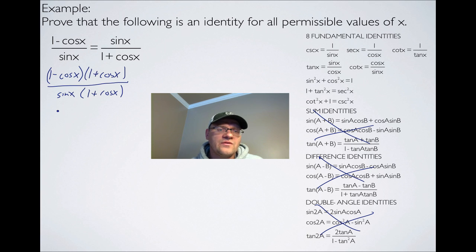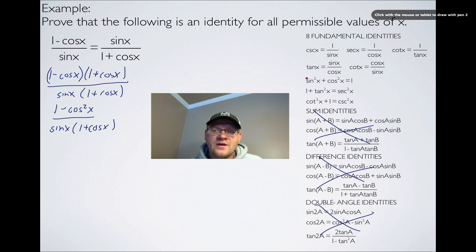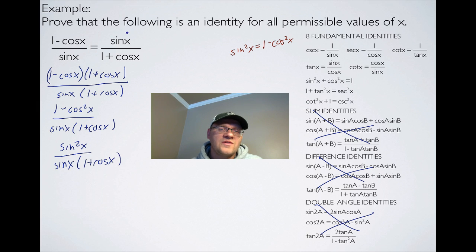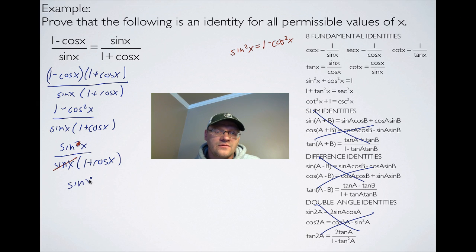Multiplying gives (1 minus cosine x)(1 plus cosine x) on top, which equals 1 minus cosine squared x. On the bottom, I have sine x times (1 plus cosine x). From the previous example, we know 1 minus cosine squared x is the same as sine squared x, so I substitute that in. My numerator is now sine squared x over sine x times (1 plus cosine x). The sine x on the bottom cancels with one factor on top.